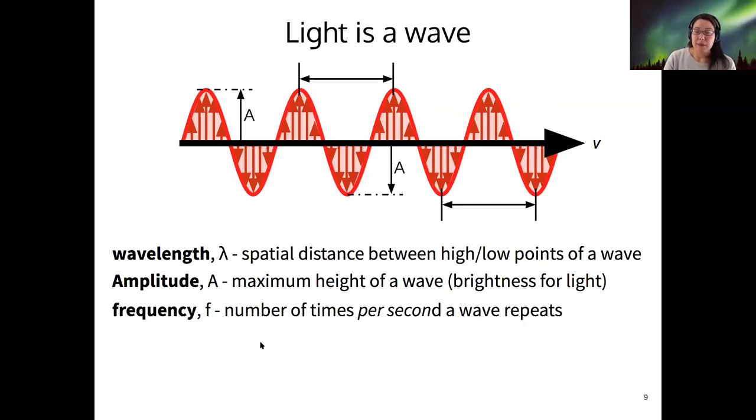And then the frequency is how many times per second a wave repeats. So that means going from, for example, peak to peak, if this took 100 picoseconds to go from the peak of a wave to another peak of a wave, that would be the frequency. So you can measure this wave both in terms of distance and in terms of time, but we'll usually refer to the distance measurement, to the wavelength.